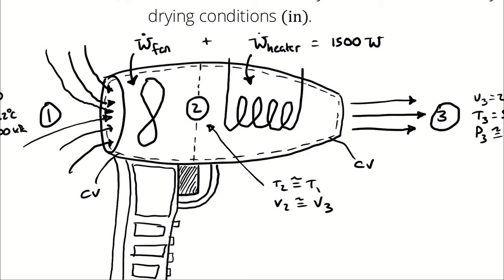In the interest of fully exploring the example problem, let's try analyzing both ways: first, the fan and heater together as one control volume, and then individually. I'll call control volume 1 just the fan, and control volume 2 just the heater, and color-code them to make it easier to see.